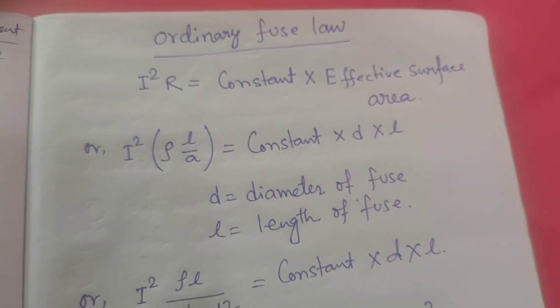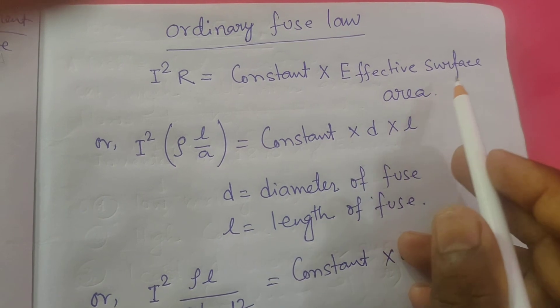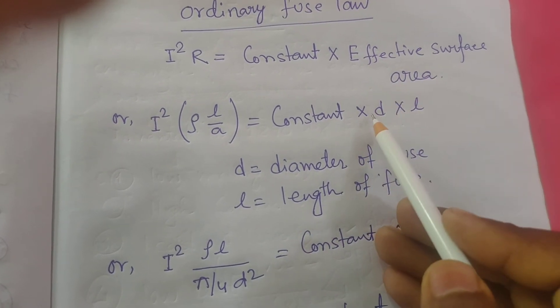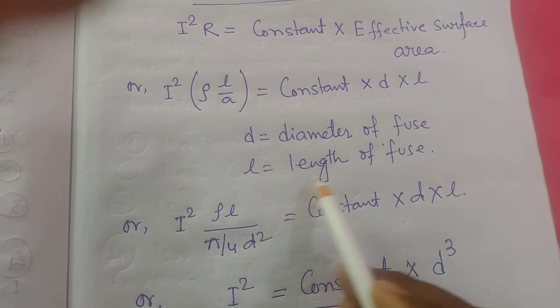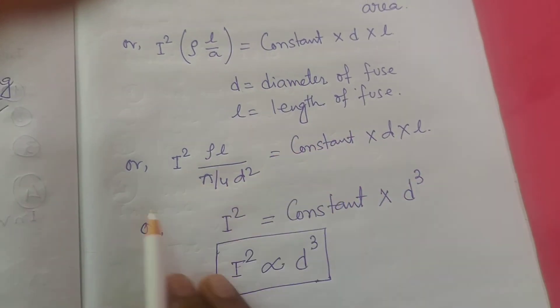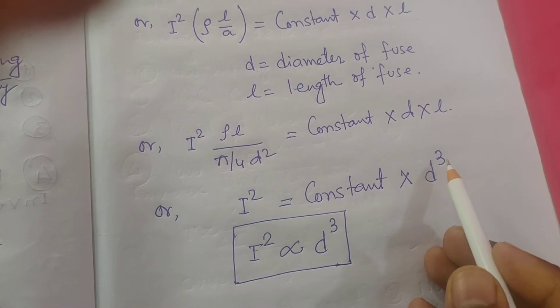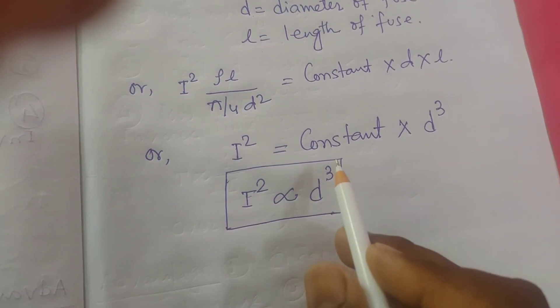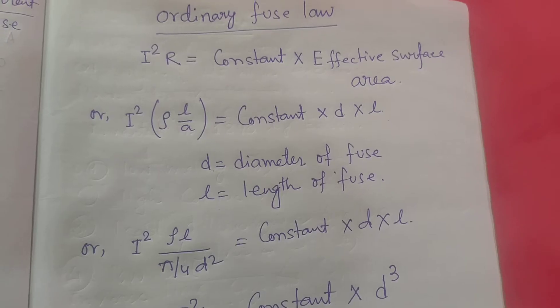Let's discuss the ordinary fuse law. This is very important: i squared r equal to constant into the effective surface area. So i squared r equal to zeta l by a equal to constant times effective surface area d into l, where d is the diameter of the fuse and l is the length of the fuse. By analysis of the formula, we get i squared r equal to constant into d cube. So i squared is proportional to d to the power 3. This is the ordinary fuse law.